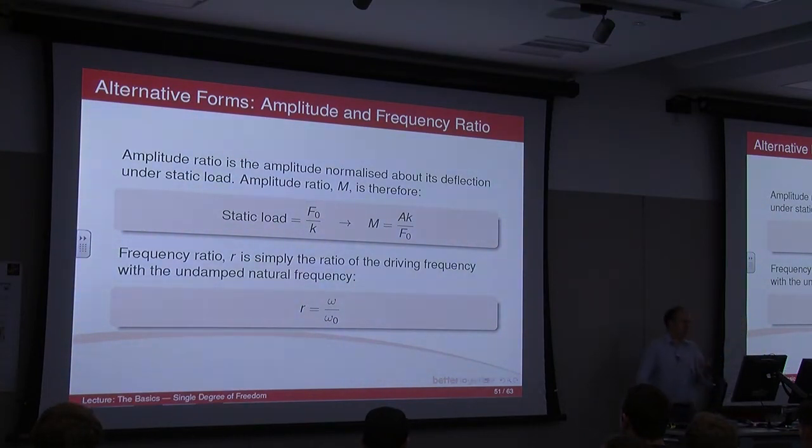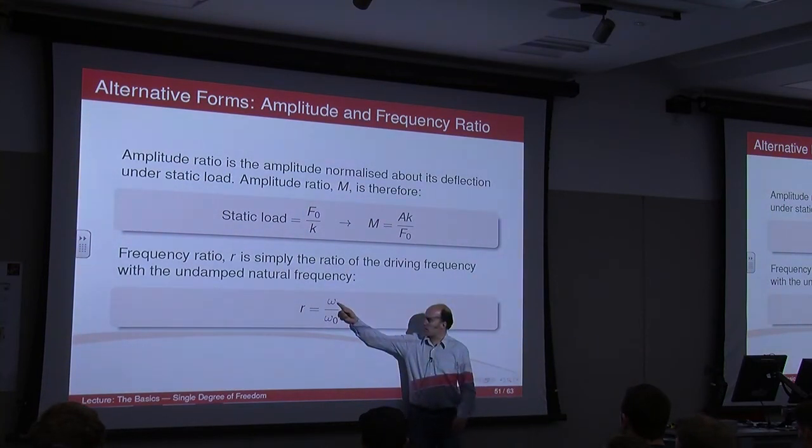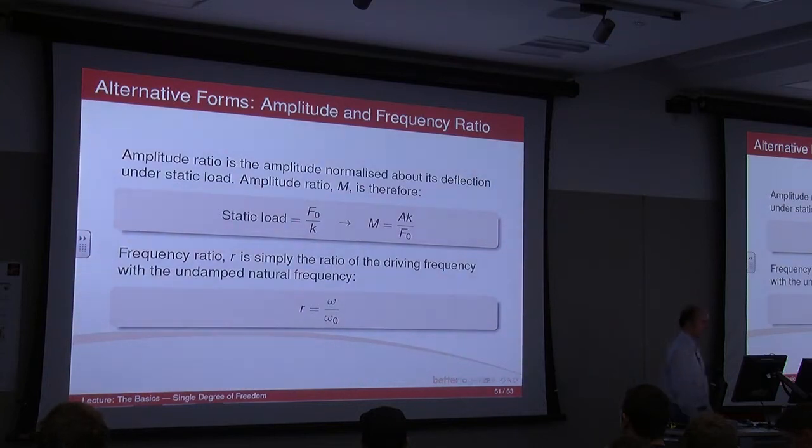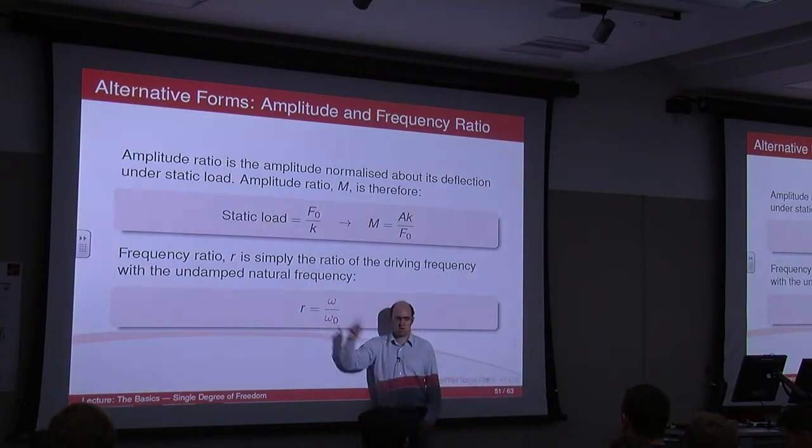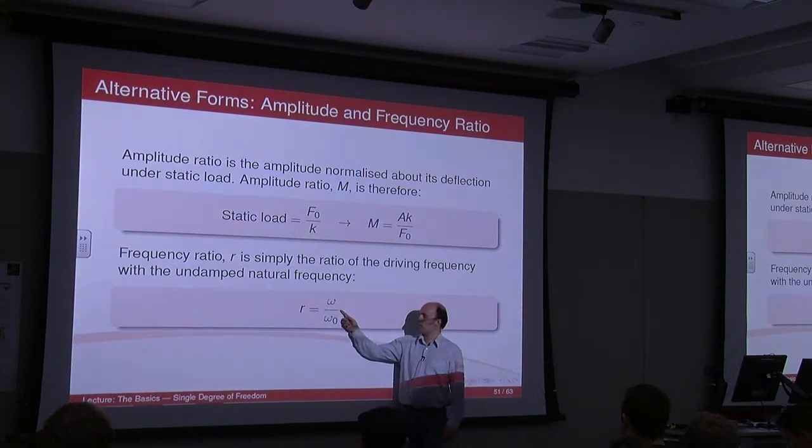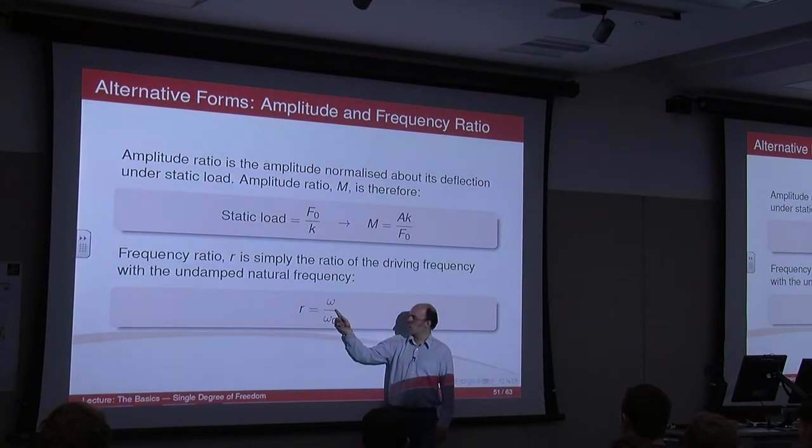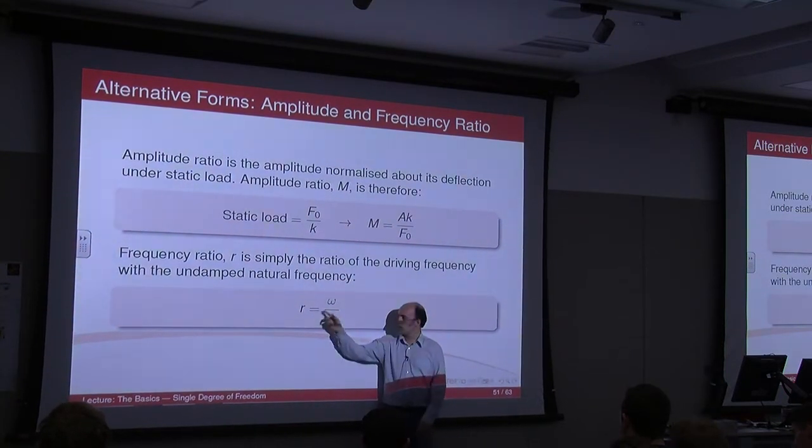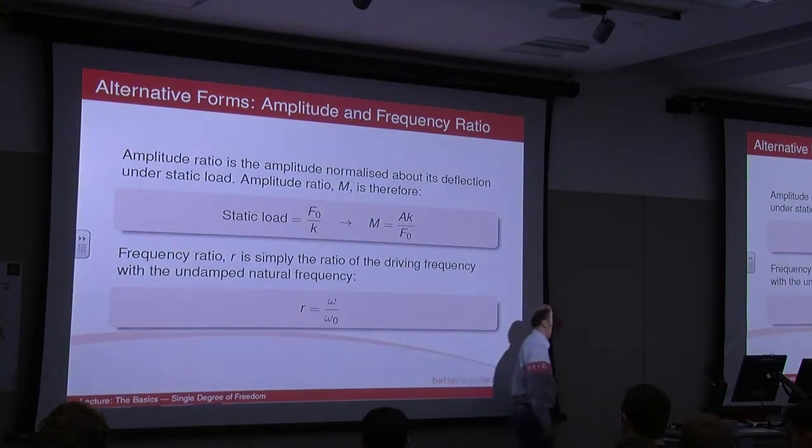The frequency ratio is a similar concept. It's about relating the frequency at which you're oscillating a system at with the natural frequency of the system. So, obviously, when your frequency is very low, this number is also very low. When your frequency is very high, then obviously this number is also very high. And when your frequency is very close to omega naught, or at omega naught, then obviously r is going to equal one.